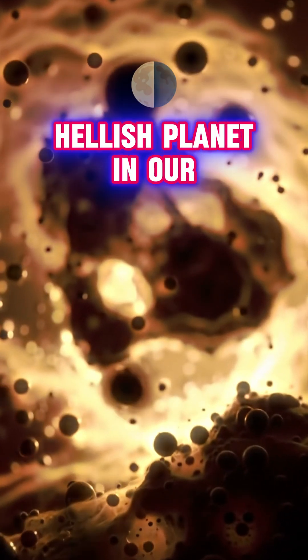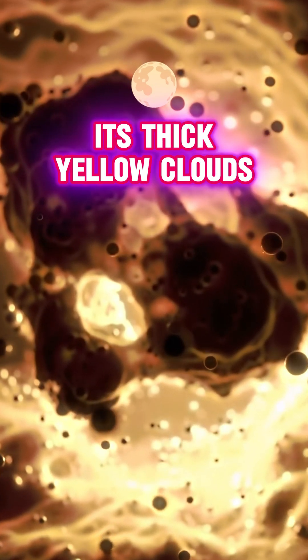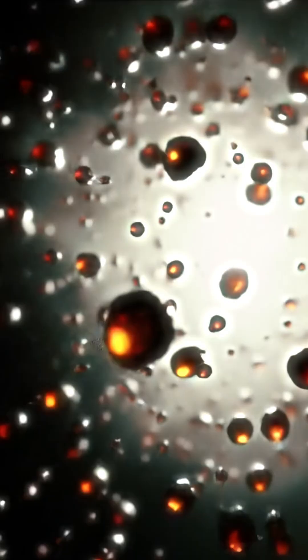Venus is the most hellish planet in our solar system. Its thick yellow clouds are made of sulfuric acid. Yes, real acid.